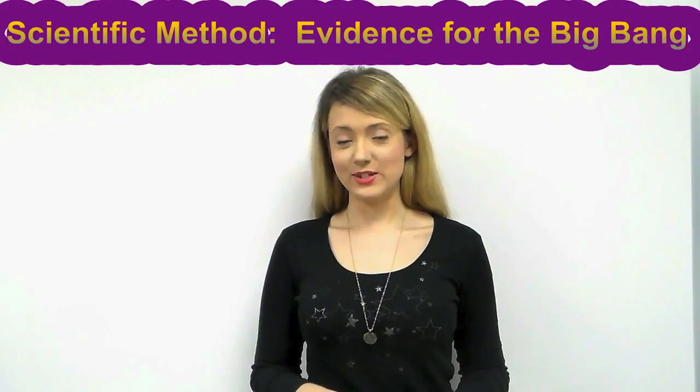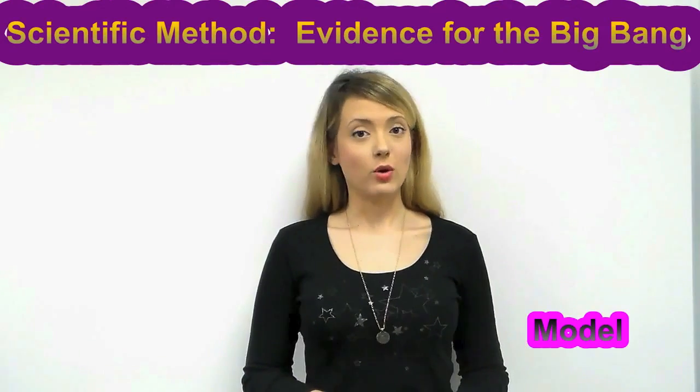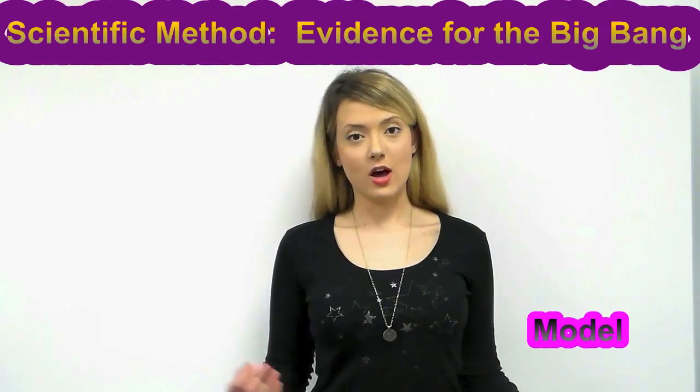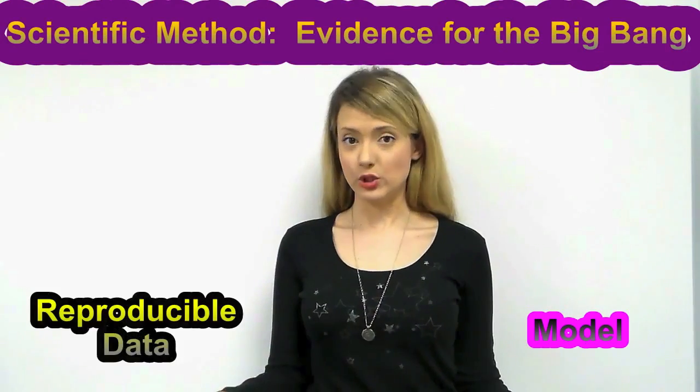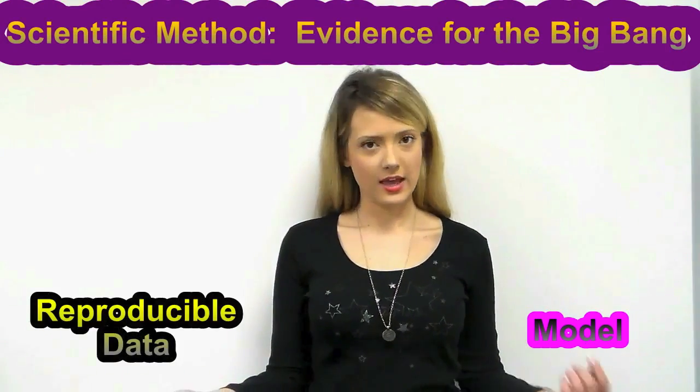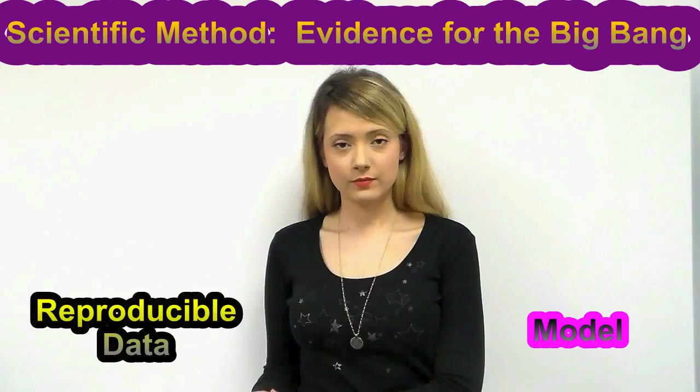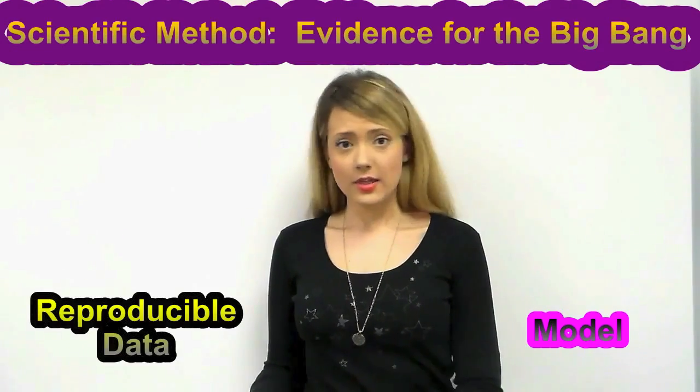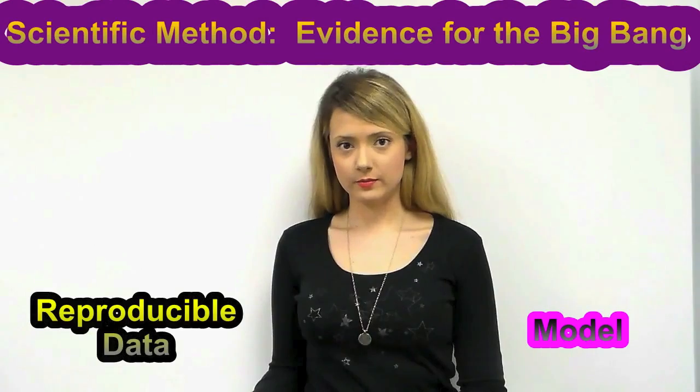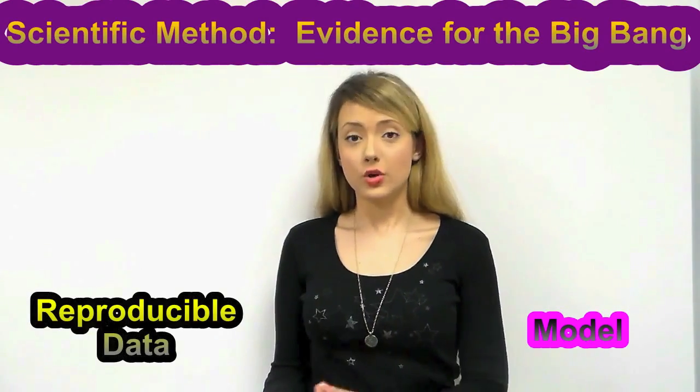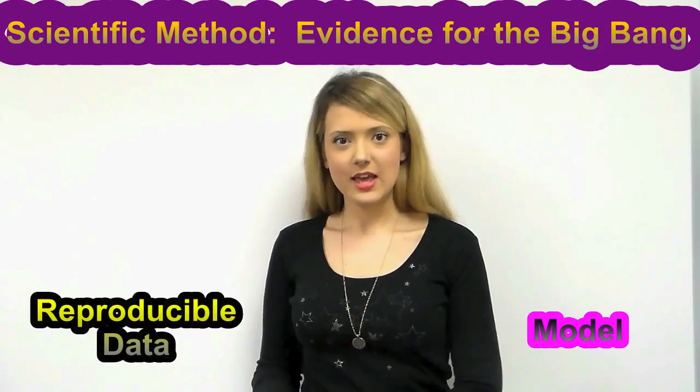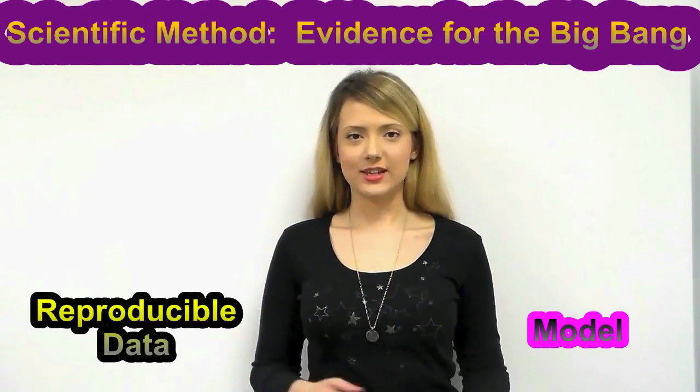The scientific method is the foundation of science. It requires a model and observational data which are reproducible. Now the model has to correctly predict the data. When it doesn't, that's when the model ceases to apply. But when the model correctly predicts the data, then the scientific community reaches a consensus.